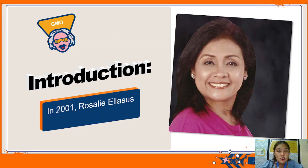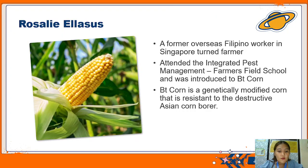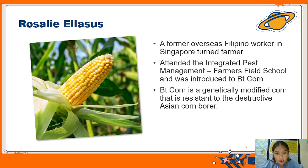In 2001, Rosalie Elazo - this is one of the success stories of a genetically modified organism. Rosalie Elazo was a former Filipino worker in Singapore who turned to farming. She attended an Integrated Pest Management Farmers Field School where she was introduced to BT corn. BT corn is a genetically modified corn that is resistant to the destructive Asian corn borer, which is a pest on crops. Miss Elazo volunteered for demo testing in her field, and the BT corn yielded 7,200 tons per acre compared to the regular yield of 4.2 tons per hectare.